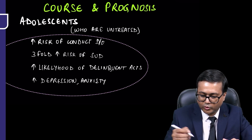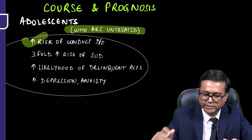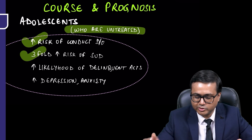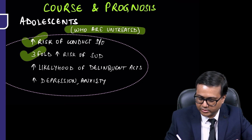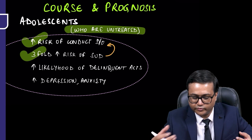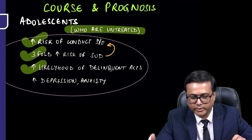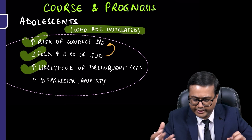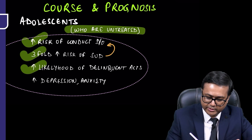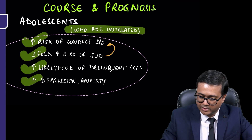If the adolescent is untreated, there is an increased risk of conduct disorder, and a threefold increase in risk of substance use — especially if conduct disorder is also present. There is also increased likelihood of delinquent acts, such as car accidents, increased sexually transmitted diseases, and an increase in depression and anxiety in such adolescents.